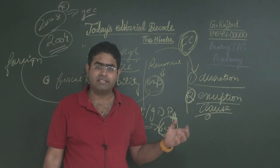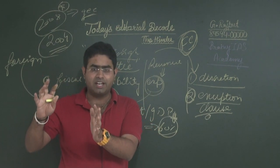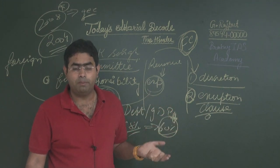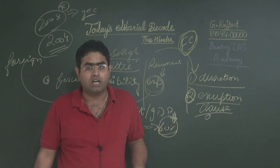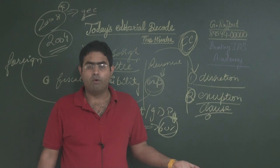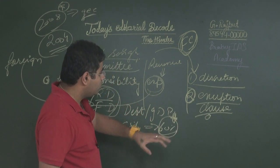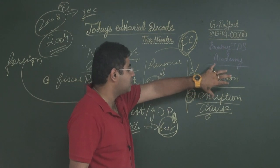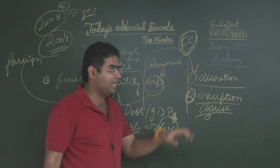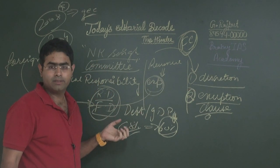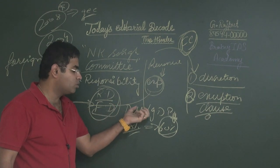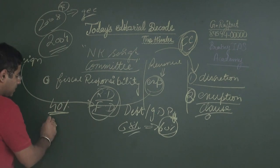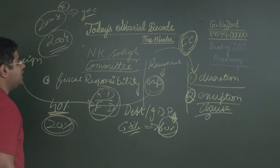So the NK Singh Committee recommended: don't focus on fiscal deficit and revenue deficit alone — though they should be reduced and brought to the limit of 3% of GDP — but also consider the exception clause for situations where the government may have to deviate from a prudent fiscal path. For the debt-to-GDP ratio, the target of 60% overall is proposed, with 40% for the centre and 20% for the states.